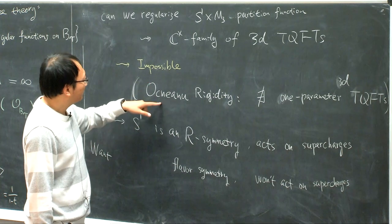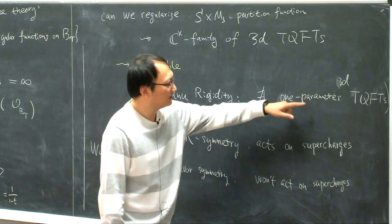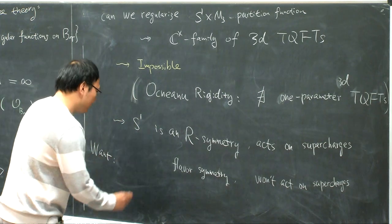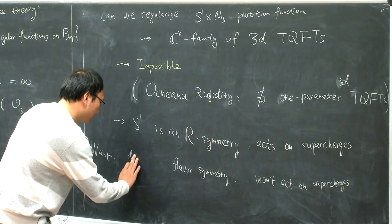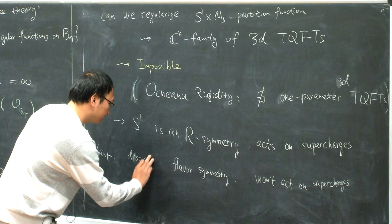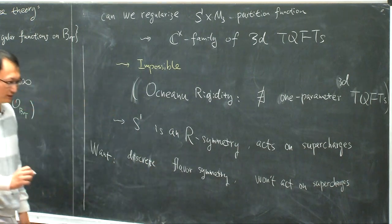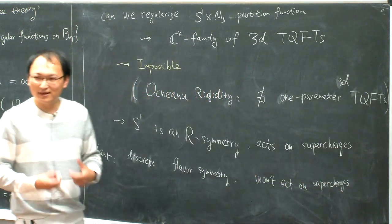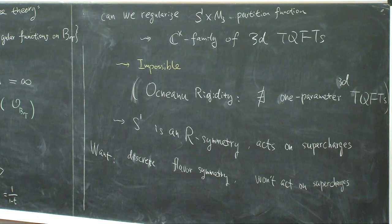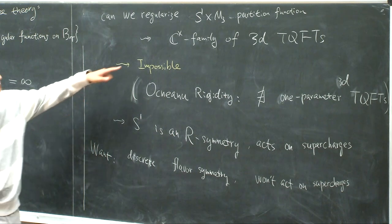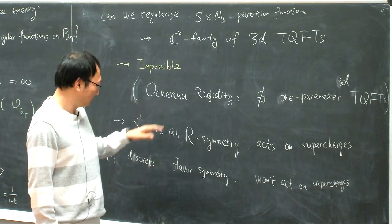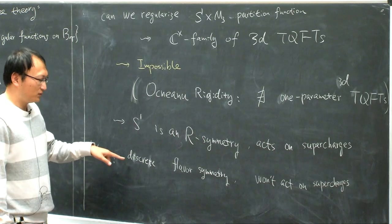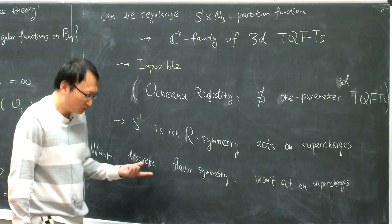But how to find discrete flavor symmetries? For different theories, they tend to have different kinds of flavor symmetries. It turns out that for a large class of theories, there are some canonical ones. Why does it work for S^1 × S^3? If you compactify on S^3 or any Sasaki-Einstein manifolds, in the end for the resulting quantum mechanics there is going to be some flavor symmetry closely related to U(1). And because it's a flavor symmetry, you can use it.